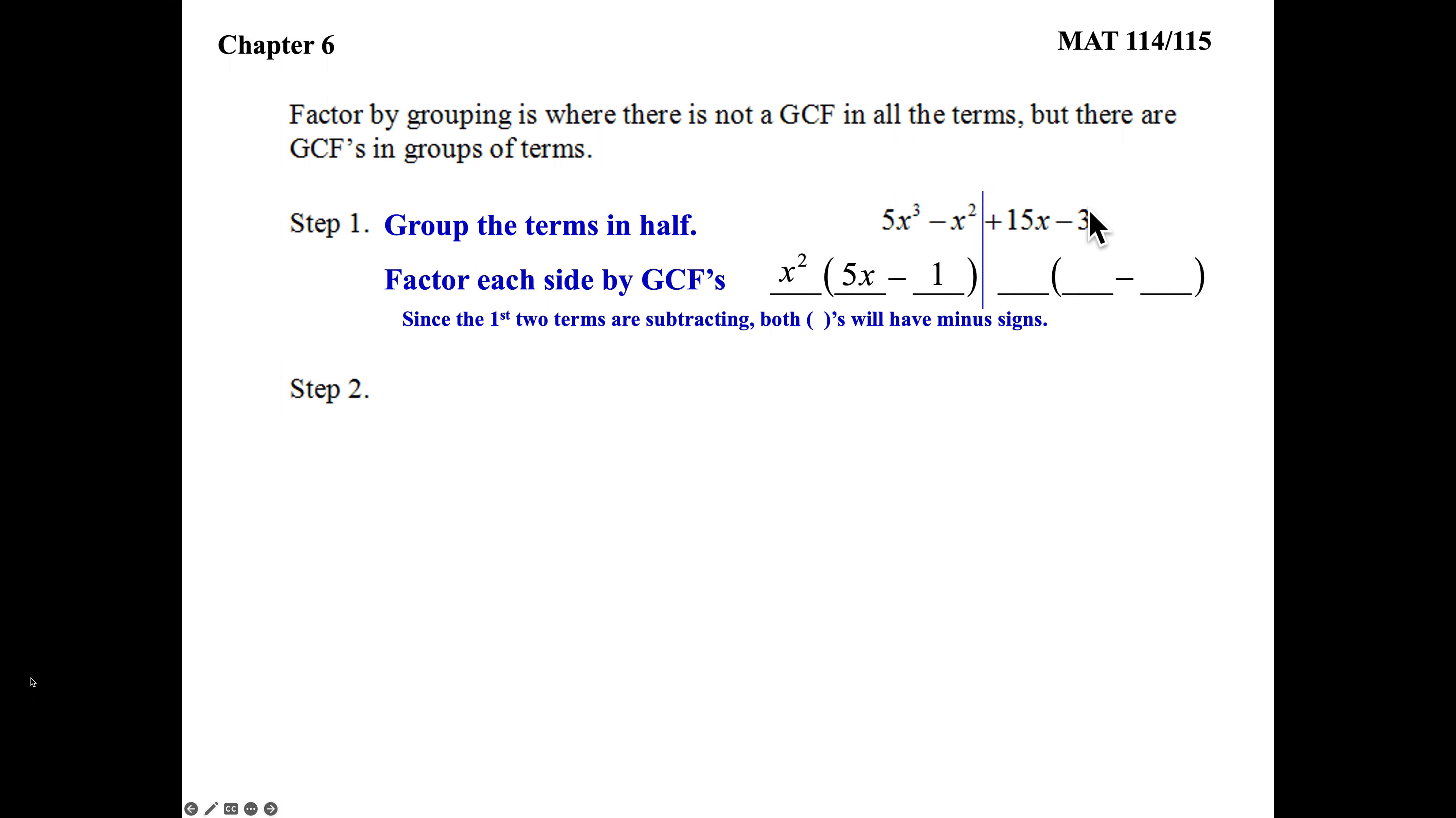Looking at the right side, the GCF between 15 and 3 will be a positive 3. 15 divided by 3 is 5, and bring the x with it. Negative 3 divided by 3 is a minus 1.